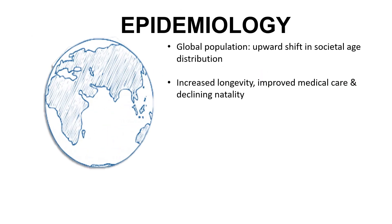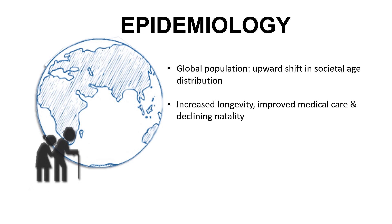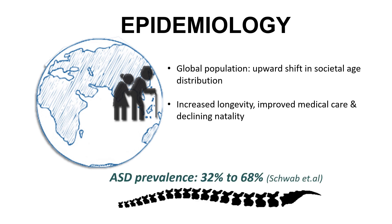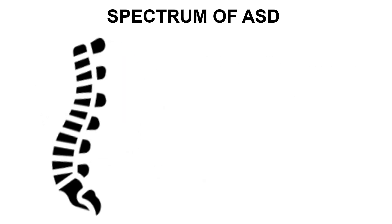Global populations are witnessing an upward shift in societal age distribution because of several factors including increased longevity, improved medical care, and declining natality. With a higher proportion of healthy elderly subjects, the incidence and prevalence of ASD is on the rise, with Schwab et al. reporting a prevalence of 32% to as high as 68% in the older population.